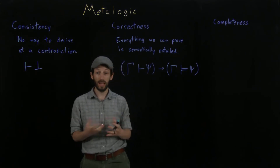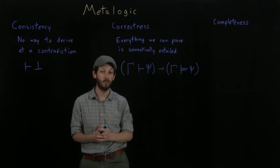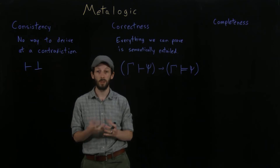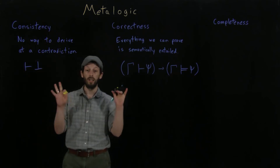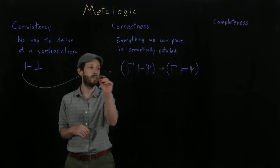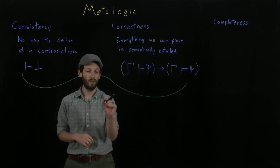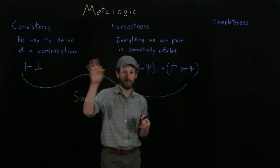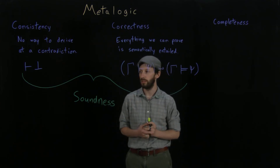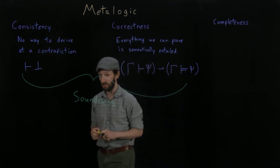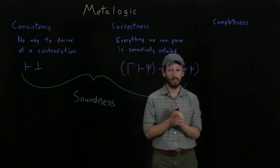Someone has to go and prove these properties for a theory, and propositional logic is just one possible theory of many. Combining consistency and correctness gives us something called soundness. We say a theory is sound if it is both consistent and correct — meaning you won't find inherent contradictions within the theory, and you won't be able to prove things you just shouldn't be able to prove. Every theory we want to work with should have these properties.